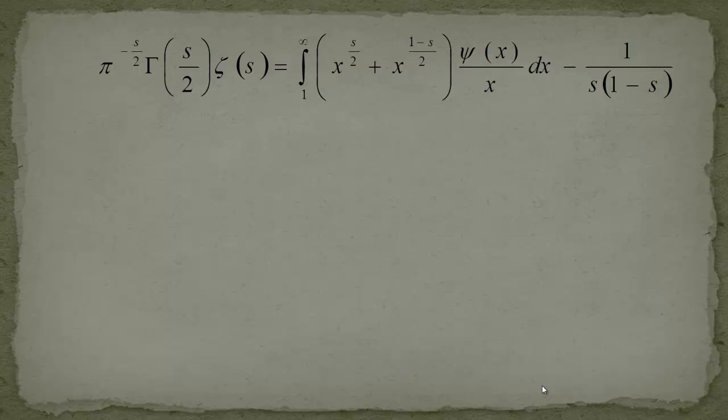We just have to look up the stuff that we did before for deriving the Riemann functional equation. We use this kind of representation: π to the minus s/2 gamma s/2 zeta of s is equal to this integral 1 to infinity x to the s/2 plus x to the 1 minus s over 2 then ψ(x) over x dx minus 1 over s(1 minus s).